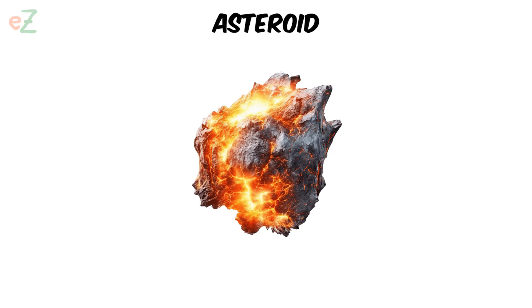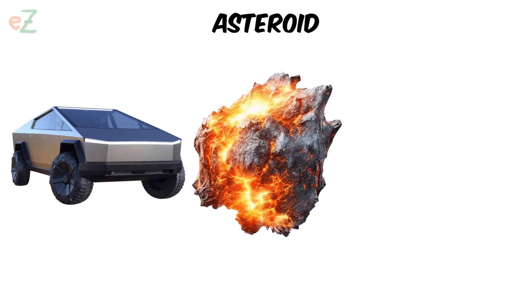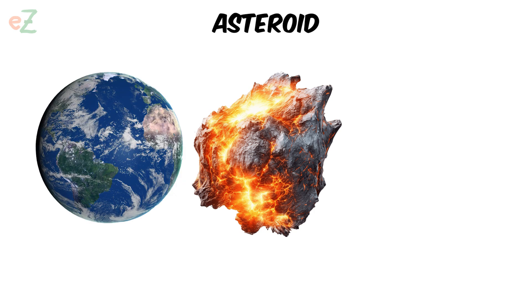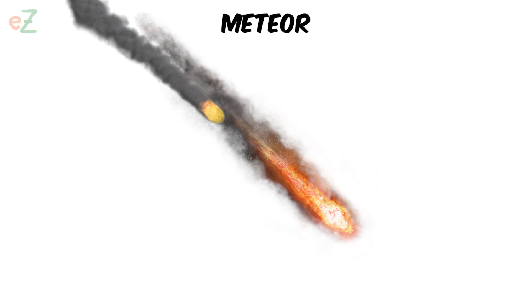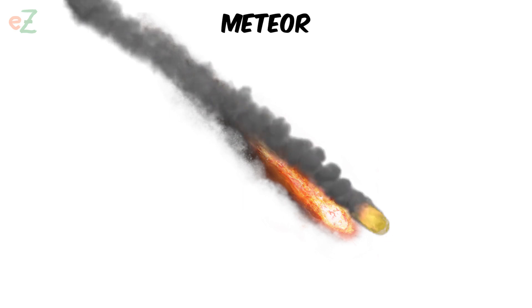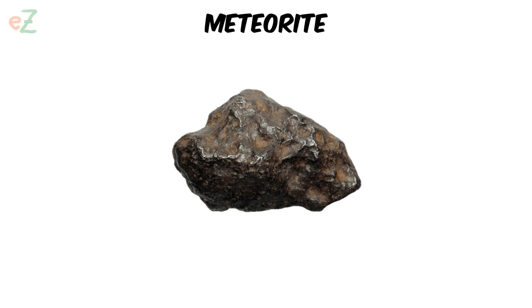Asteroid. Rocks floating around in space. Some are the size of a cyber truck. Others are hundreds of miles across. Meteor. The streak of light caused when a meteoroid enters a planet's atmosphere and starts to burn from the heat of friction. Meteorite. A meteoroid that lands on the surface of a planet.